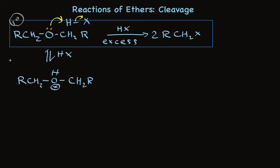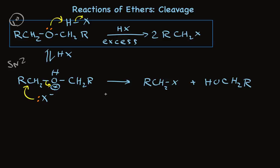So now we can expect that an SN2 reaction will take place with a primary alkyl group, with a halide that results from the protonation reaction, using a pair of electrons to act as a nucleophile. The result is an alkyl halide plus an alcohol.